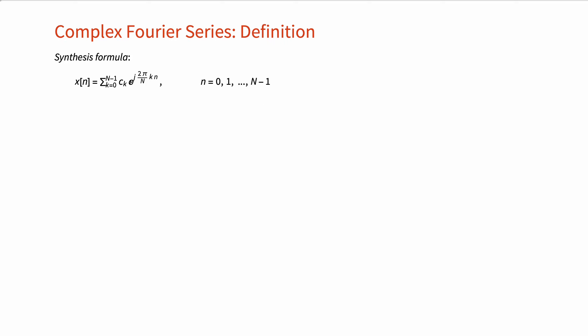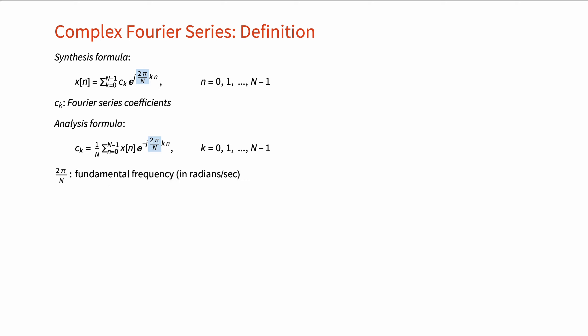The complex Fourier series is a representation of a periodic sequence of period N in terms of a linear combination of N harmonically related complex exponential sequences, as shown here with the synthesis formula. The coefficients c_k are known as the Fourier series coefficients of the signal x[n] and are generally complex; they can be obtained using the analysis formula as shown here. The quantity 2π/N is called the fundamental frequency in radians per second, and ω_k = 2π/N × k is the k-th harmonic.